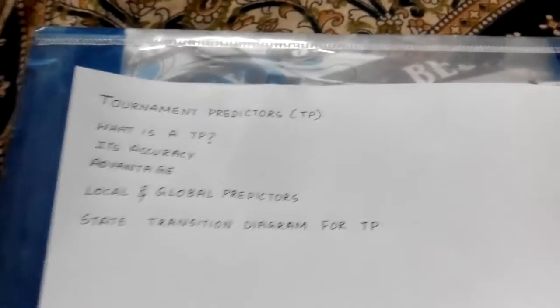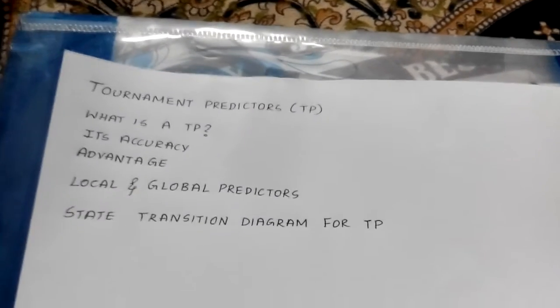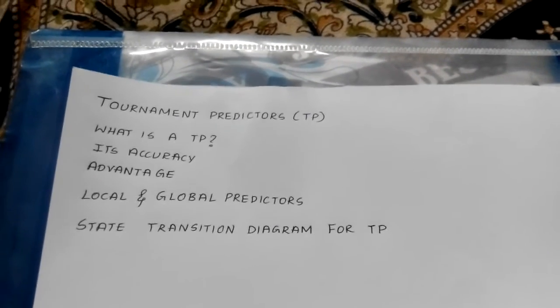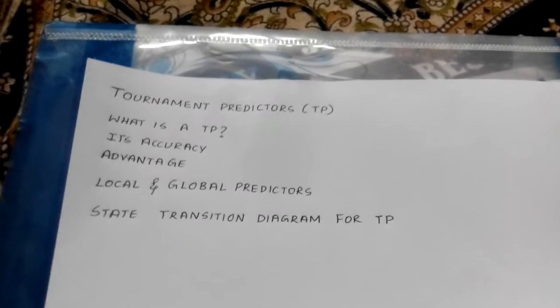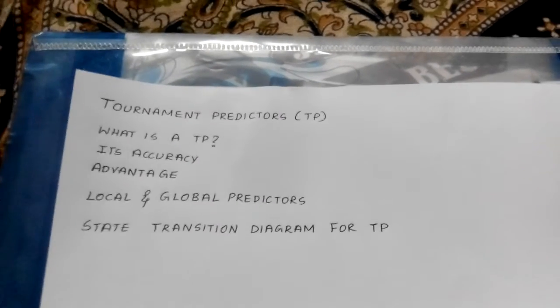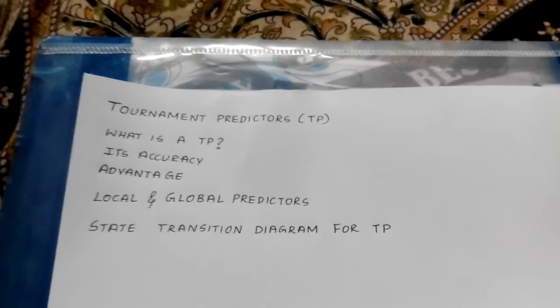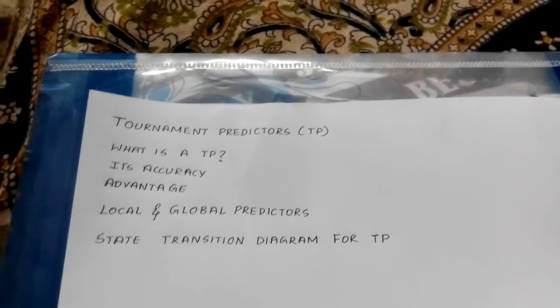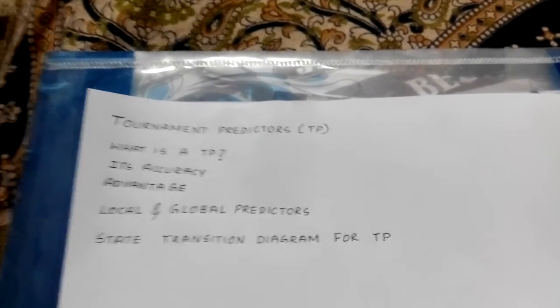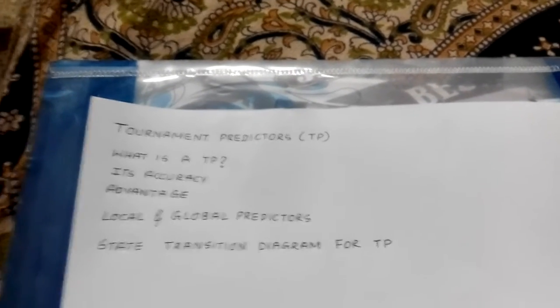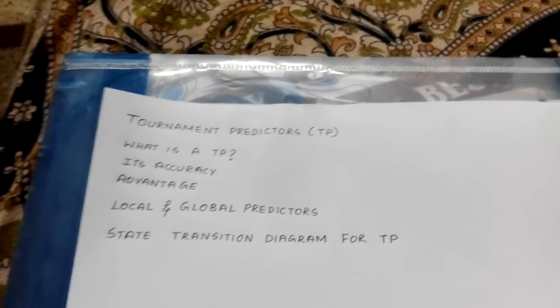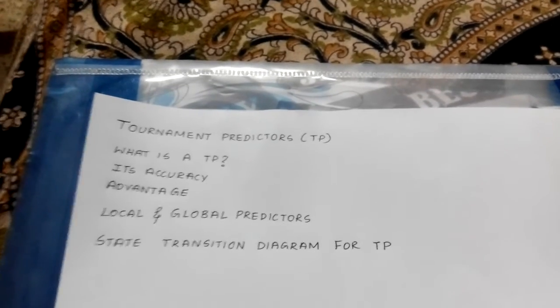Now coming to local and global predictors. The local predictor tells us whether a particular branch was taken or not taken earlier, and the global predictor tells us if other branches were taken or not taken earlier. Tournament predictor combines both a local and global predictor with a selector, and it has the ability to select the right prediction for the right branch.